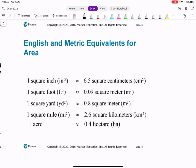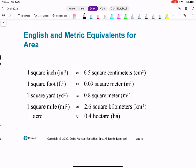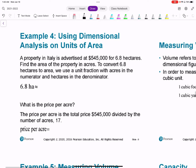We have metric equivalents in addition to our normal measuring system here. Usually the metric system you'll see used in other countries, but for the United States we mostly use our English measuring units: inches, feet, yards, miles, and acres. So it says a property in Italy is advertised at 545,000 for 6.8 hectares.